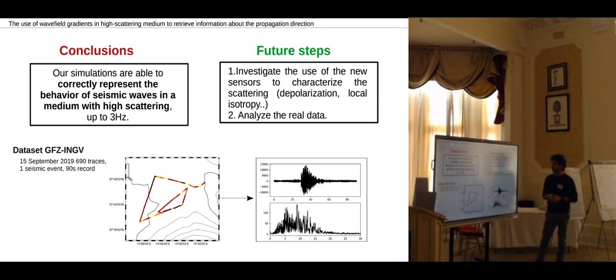So just my conclusion is that we think that our simulations are correctly representing the behavior of seismic waves, at least in this range of frequencies up to 3 Hz. In the future we would like to investigate the behavior of the gradients and also to work with the dataset we had from GFZ, in which we have data from Etna. And that's it.